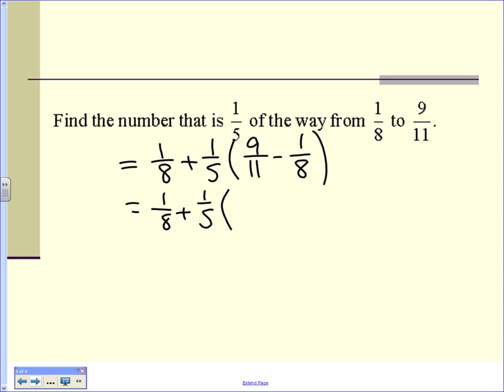9 elevenths minus 1 eighths. I can make it 72 over 88 minus 11 over 88, right? What is 72 over 88 minus 11 over 88? 61 over 88. Do you agree so far? Then what do you do?